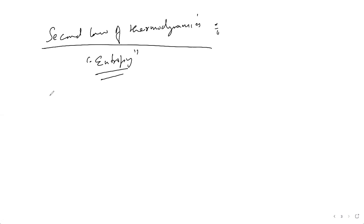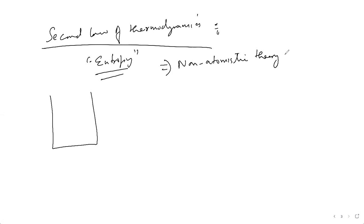Let me build up a setup here. I want to emphasize the non-atomistic approach. In this approach, you consider matter as a continuum body — you don't have to look at electrons, protons, or the division of matter into atoms or molecules. It's a continuum thing. That's basically the non-atomistic theory of the second law.